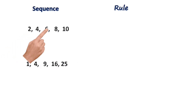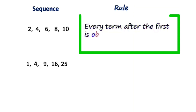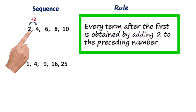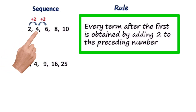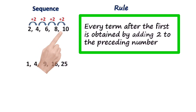First, we have the sequence: 2, 4, 6, 8, 10. Here 2 is the first term, 4 is the second term, 6 is the third term, 8 is the fourth term, and 10 is the fifth and last term. The rule is: every term after the first is obtained by adding 2 to the preceding number. So: 2 plus 2 equals 4; 4 plus 2 equals 6; 6 plus 2 equals 8; 8 plus 2 equals 10.